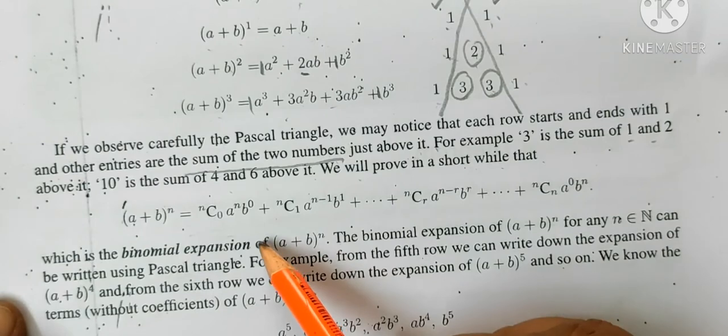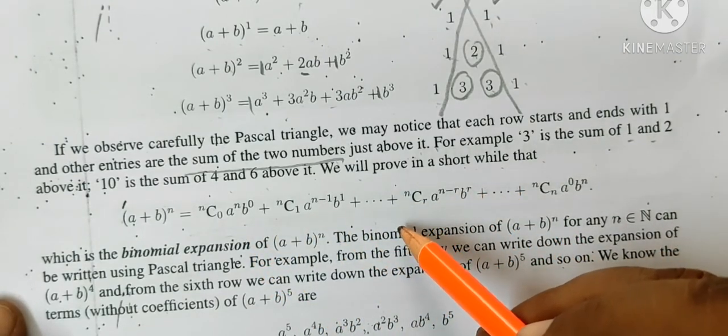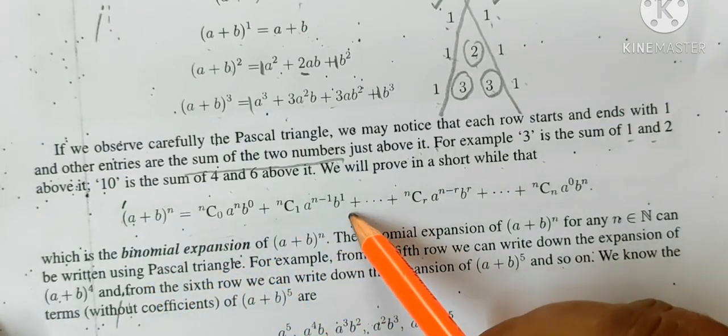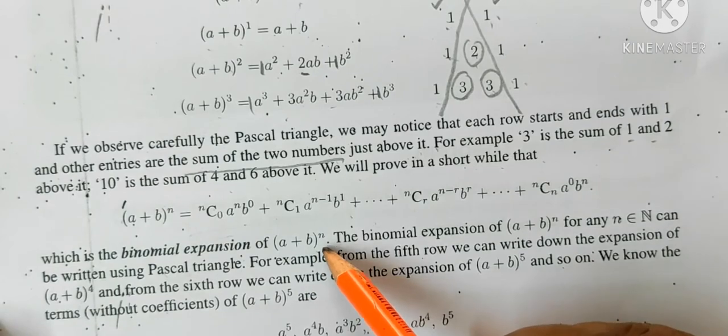This is the general expansion a plus b whole power n. This is the video stopped. We see the remaining in the next class. This is the binomial expression of a plus b whole power n.